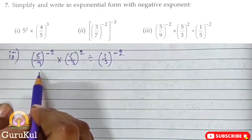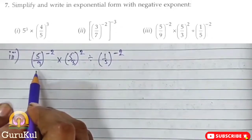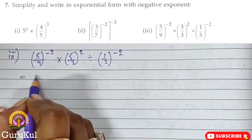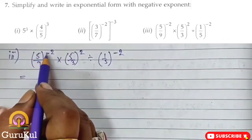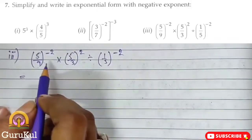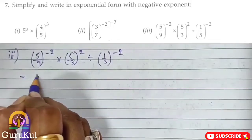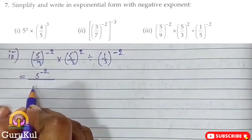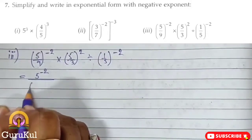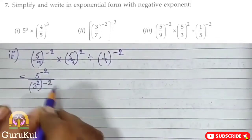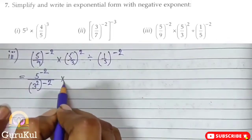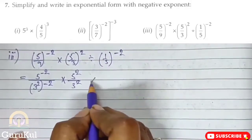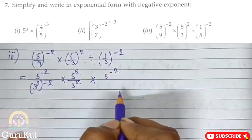Sub-part 3 of Question 6 — I had explained in an earlier sum that for exponent sums, if factors can be taken out, take them out and put the power. So we start. If we remove this bracket, it becomes into 5 to the power 2 by 3 to the power 2.